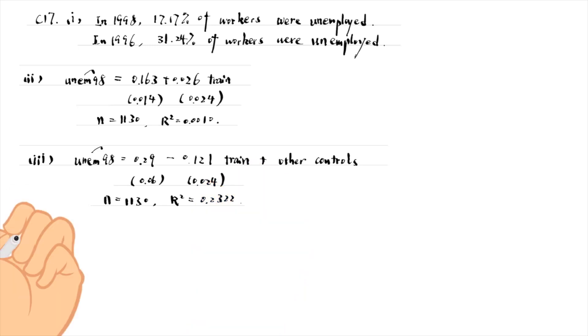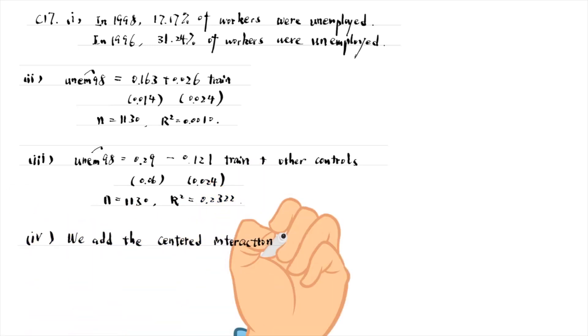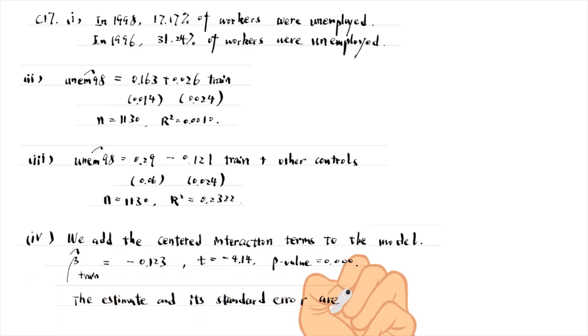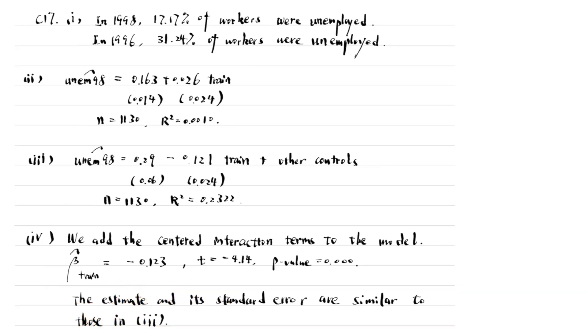In part 4, we add the centered interaction terms to the model. The estimated average treatment effect of the training is the coefficient on the variable train, which is minus 0.123. It is very close to that in part 3. The standard error is also similar. My answer to part 5 is no. The interaction terms are not jointly significant at any reasonable level.